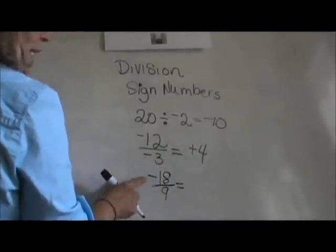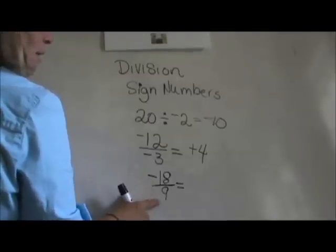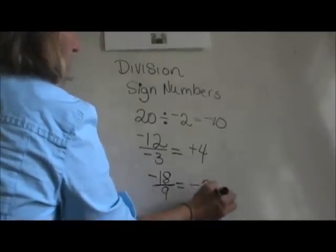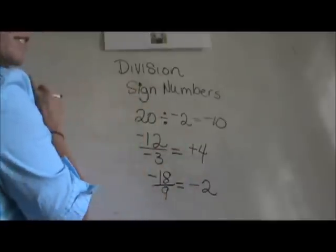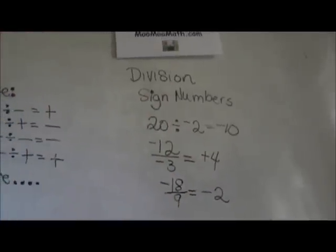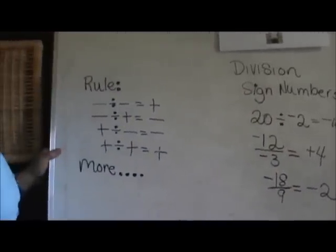The third one is negative 18 divided by positive 9, and the answer is negative 2. Now let's go over the rules of division of signed numbers, and then we'll go back in slow-mo.